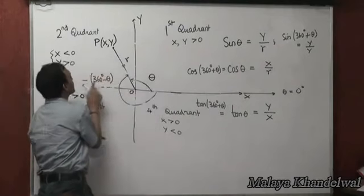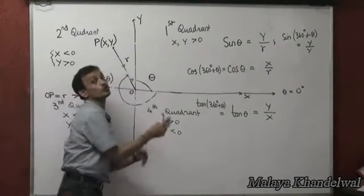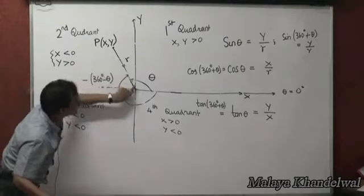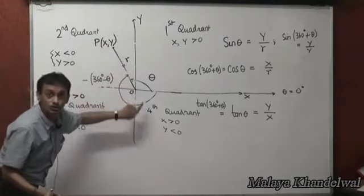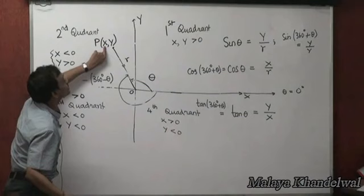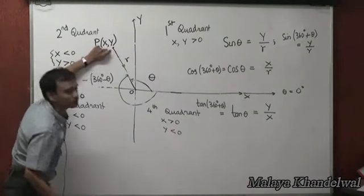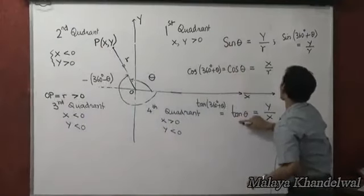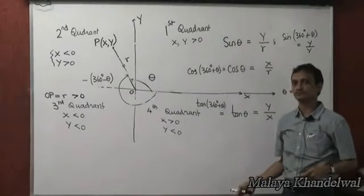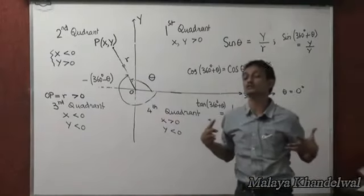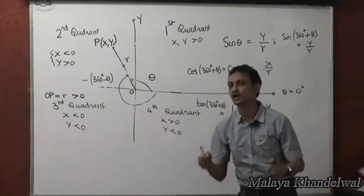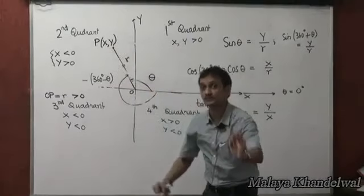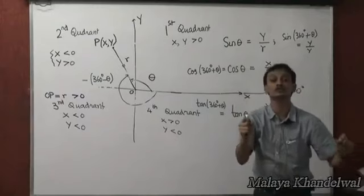If sine of theta is some value, then sine of minus 360 minus theta would also be the same. Both rotations lead to the same position of the rotating line and therefore the same coordinates x, y of the tip, leading to the same trigonometric ratios described as y/r, x/r, and y/x.